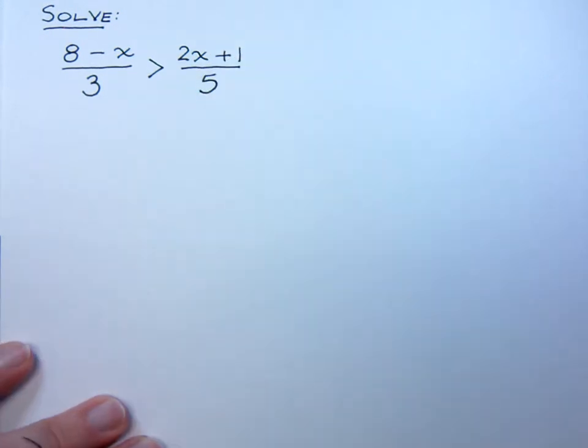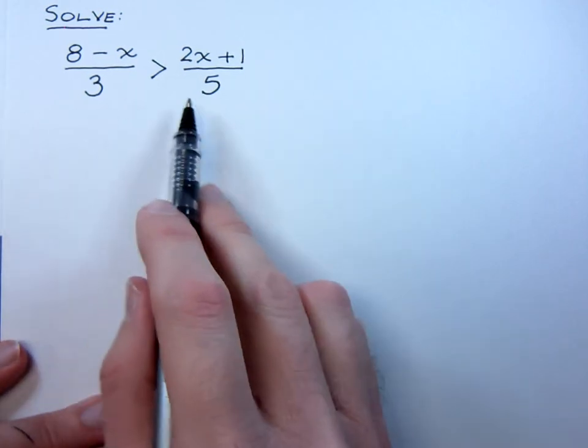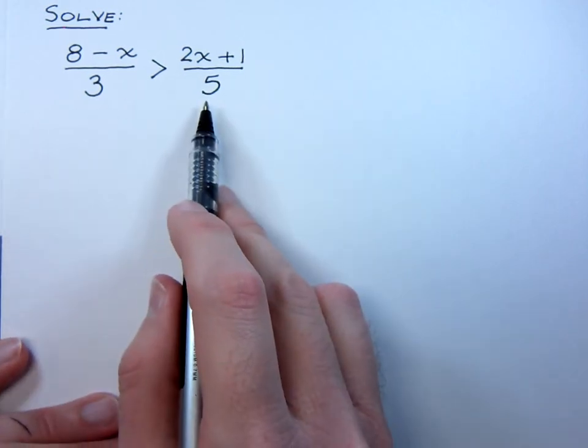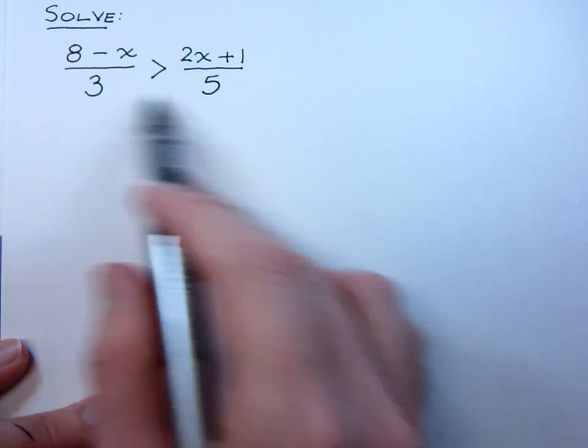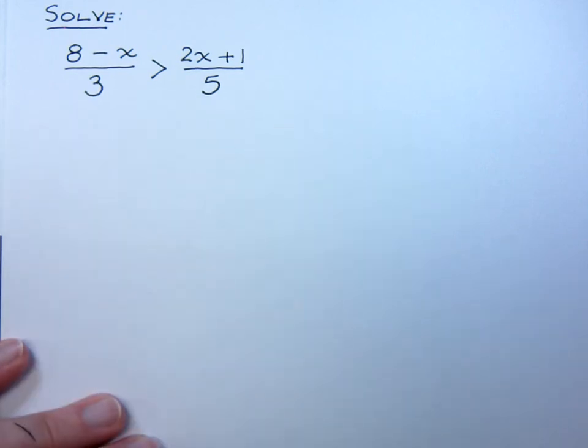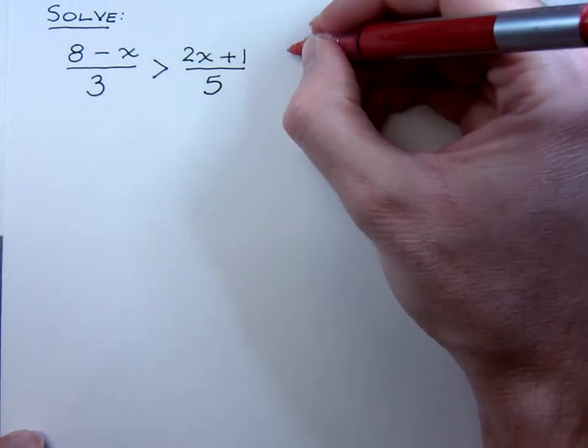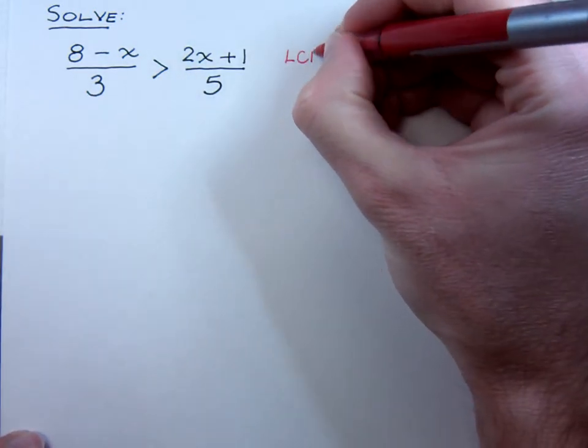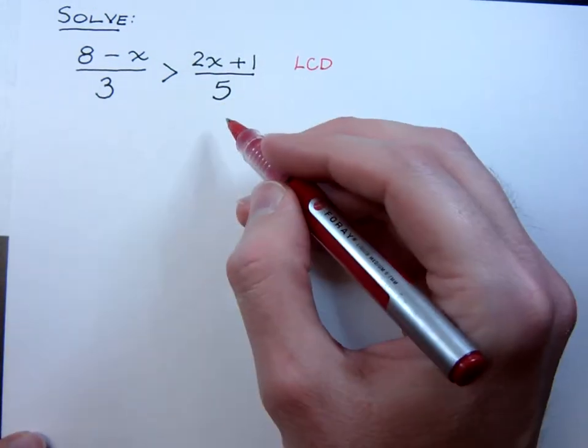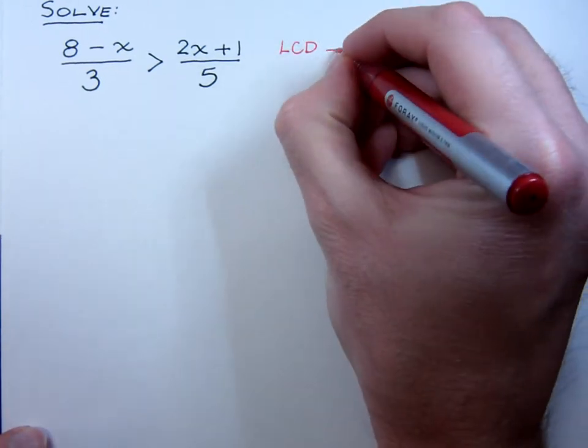Now we had an example like this when we were working with equations from before. The best thing to do, since you've got these horrible fractions, is to get rid of them. And I don't mean to pretend they're not there and just cross them out. Instead, we want to find the least common denominator and get rid of these guys. So when you look here, the least common denominator for 3 and 5 is what? Yeah, it's just 15.